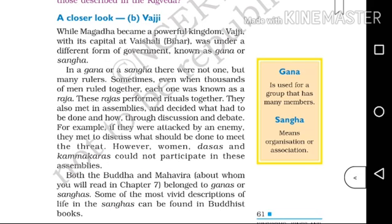A closer look at Vajji. While Magadha became a powerful kingdom, Vajji with its capital Vaishali was under a different form of government known as Gana or Sangha.